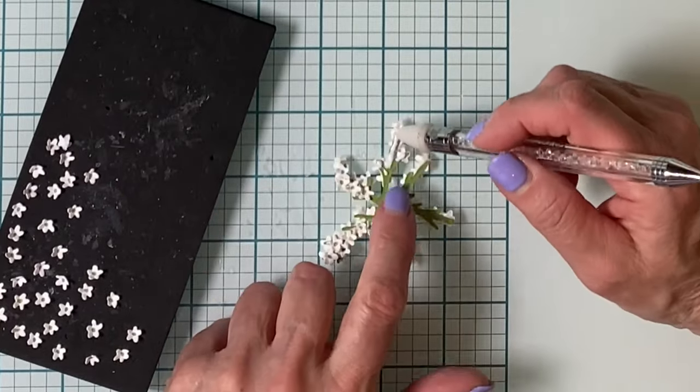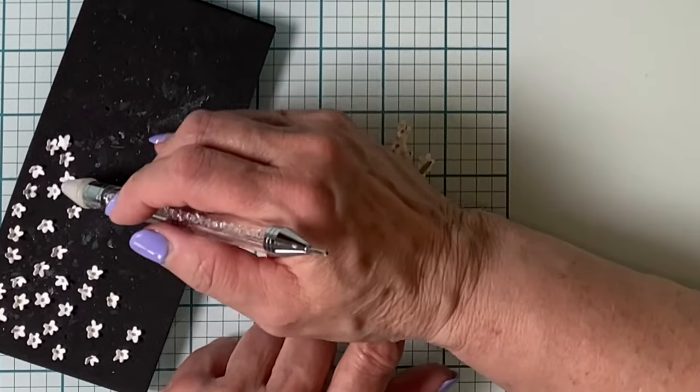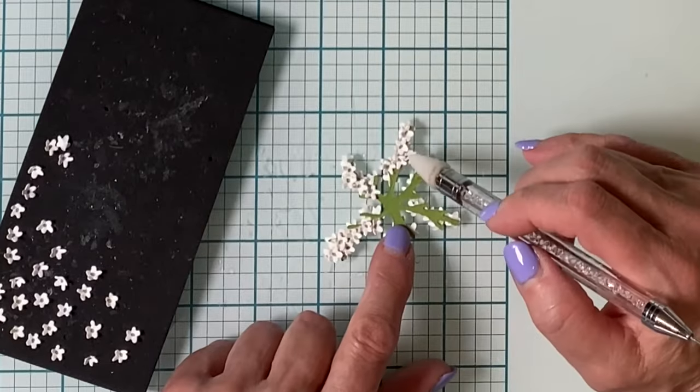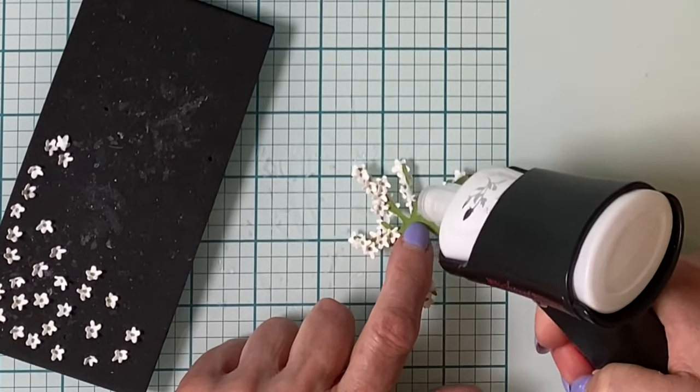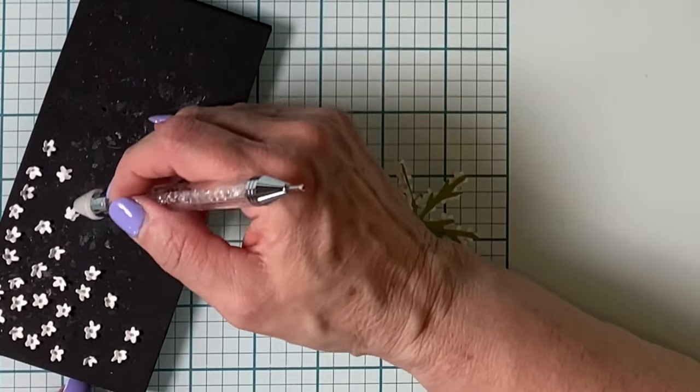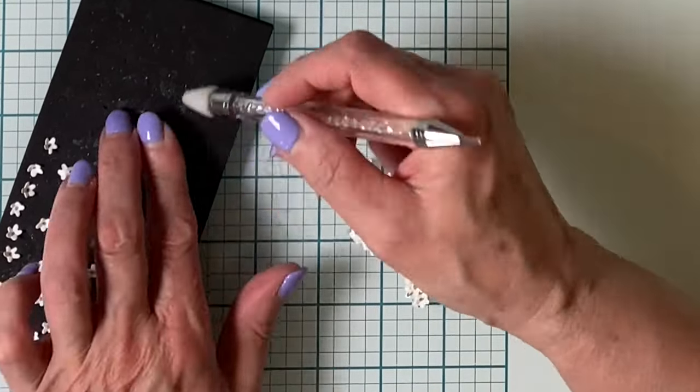Why bother adding the flowers to the back of those other three bases? First of all, this is a very dimensional flower and when it goes together, you don't want to see the bare underside of these three layers.